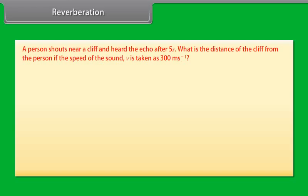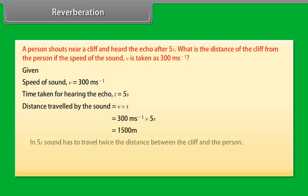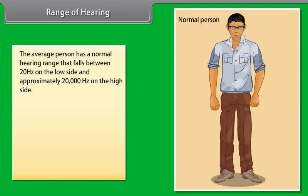Let's now solve a problem. A person shouts near a cliff and hears the echo after 5 seconds. What is the distance of the cliff from the person if the speed of the sound V is taken as 300 meter second raised to the power minus 1? Given that the speed of sound V is 300 meter second raised to the power minus 1, time taken for hearing the echo T is 5 seconds. Distance travelled by the sound is equal to V into T, which is equal to 300 meter second raised to the power minus 1 into 5 seconds is equal to 1500 meters. In 5 seconds, sound has to travel twice the distance between the cliff and the person.